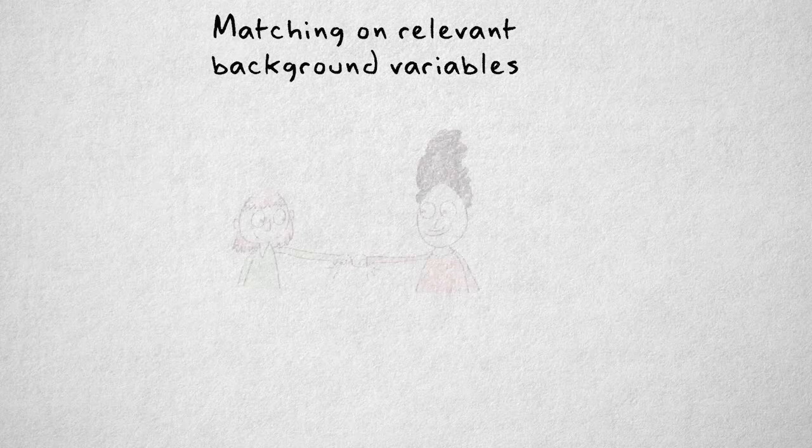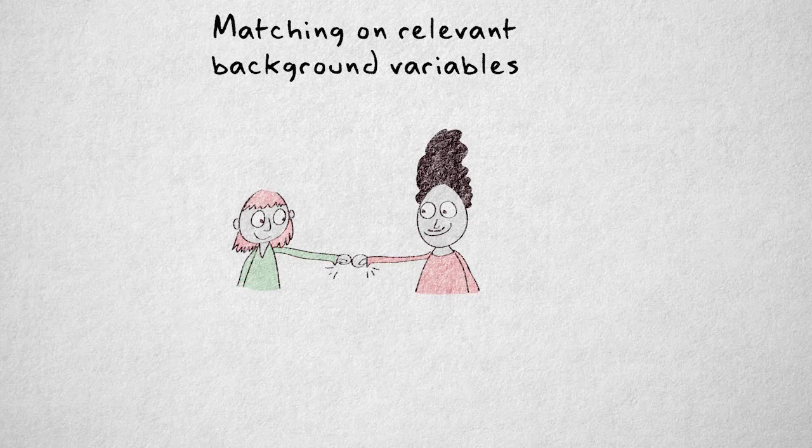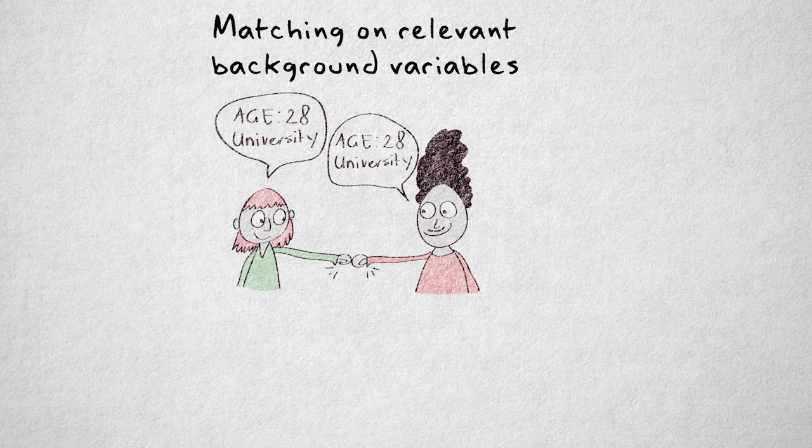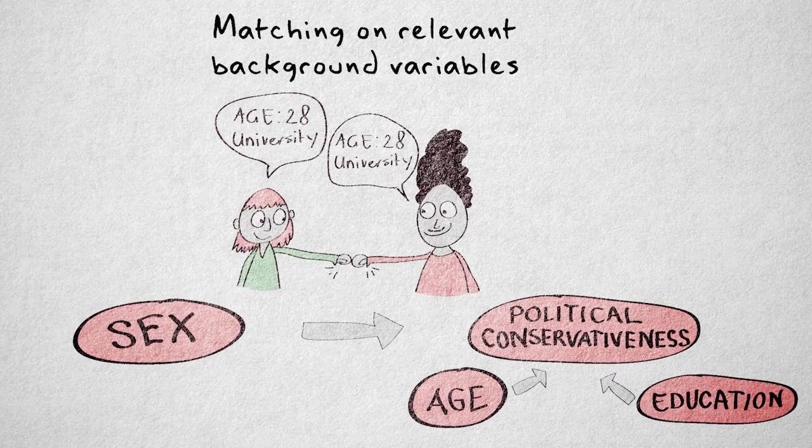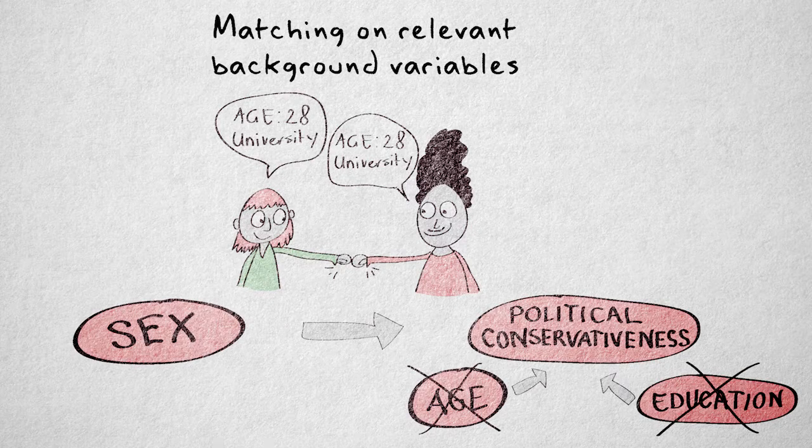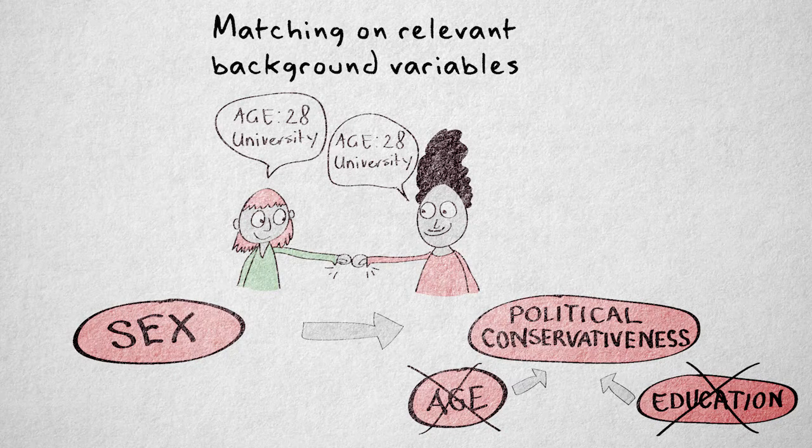For example, we could match men and women in terms of age and maybe educational level to make sure that they don't differ systematically, at least on these two properties. We've thereby excluded two possible alternative explanations for any difference in political conservativeness between men and women.